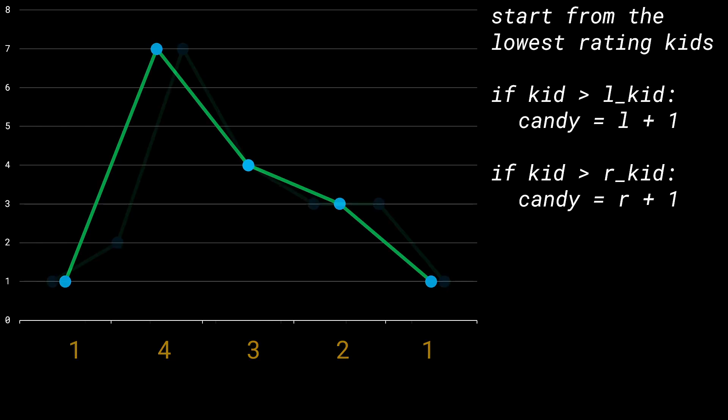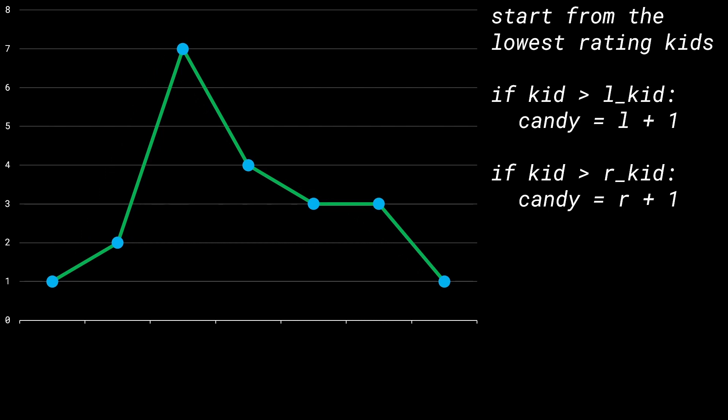Let's take one more slightly more complicated example. Feel free to pause the video and try this yourself. The first step is to start from the lowest rating kids — in this case, two kids on either side with rating 1. We assign them 1 candy each because that is the minimum possible.